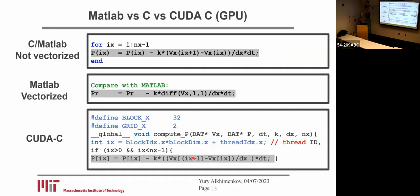Answer: Vx isn't changing — only P is changing. So Vx is already written on the disk. We just read the information.